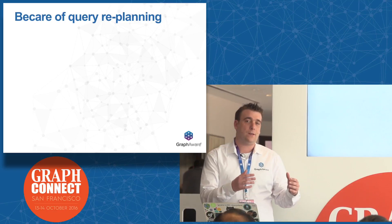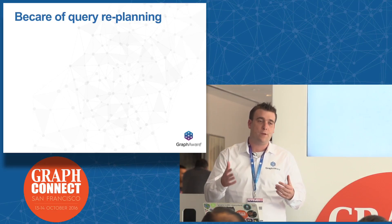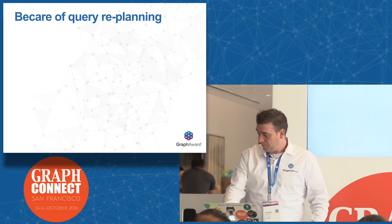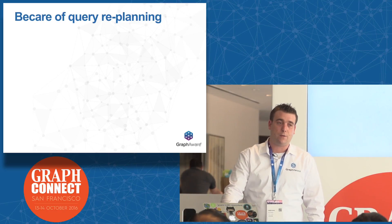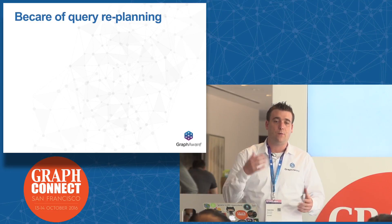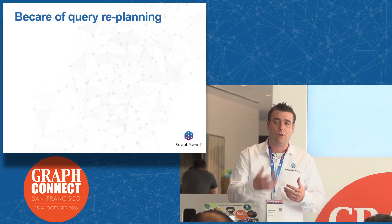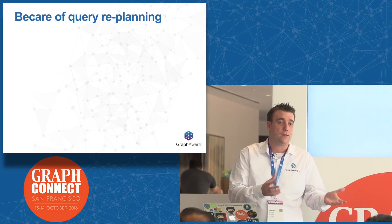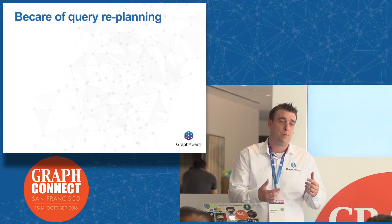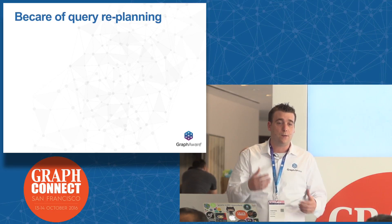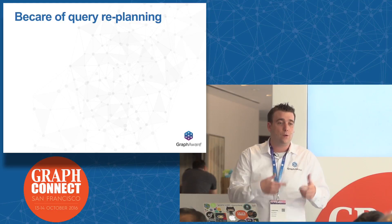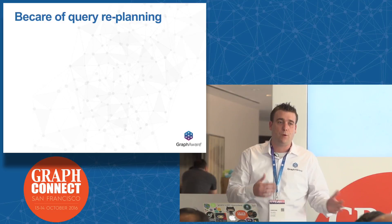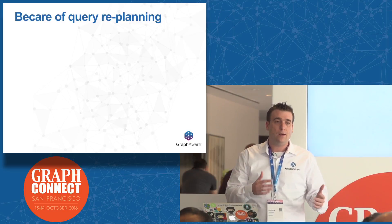There is a problem that newcomers are not used to but that you can encounter in production: query replanning. When you are creating a lot of nodes and relationships very fast, Cypher detects a query plan as stale and tries to replan the cache based on statistics. But since you are always creating new nodes and relationships, the statistics are always evolving. During batch imports, you can disable replanning.